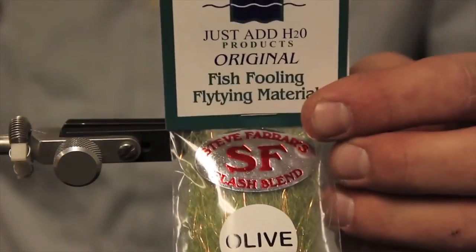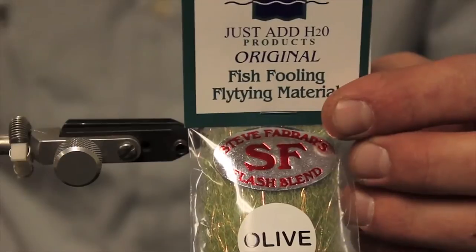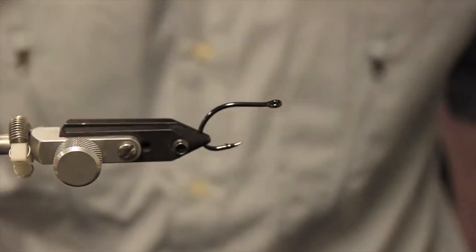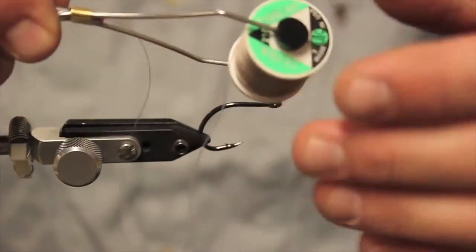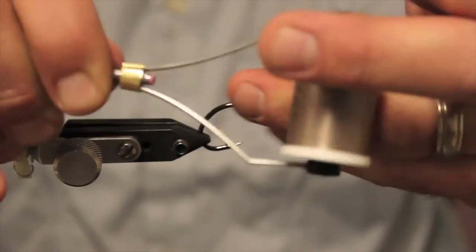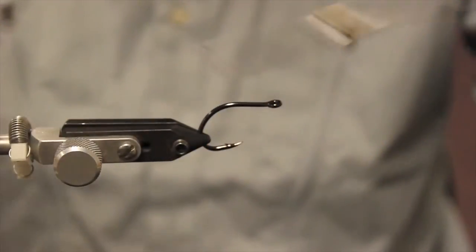And this comes in 15, 20 different colors. So you can really be creative with whatever you want to do. You want to use a little bit heavier thread. I'm using a 2-10 thread here. You can use Kevlar thread or 3-0, anything heavy. You just want a heavier gauge for your saltwater flies.